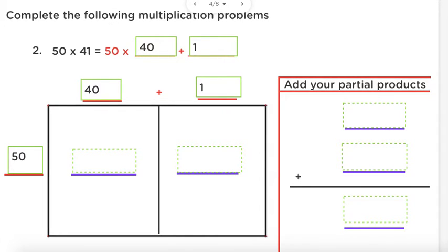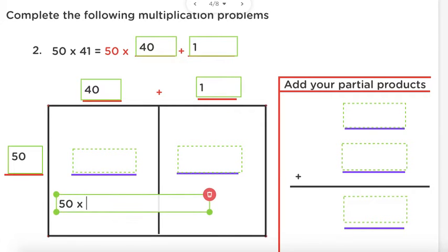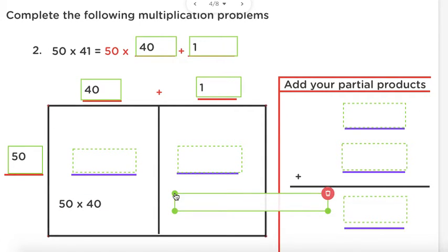Now we multiply. What two numbers are we going to multiply first? Here's a hint — look all the way on top of your first box to see what you're multiplying 50 by first. So I'm multiplying 50 times — that's right, 40. And now let's do the same thing for our second box: what am I going to multiply 50 by next? Good — 1.